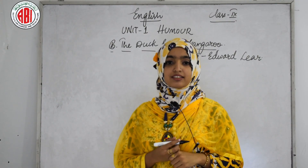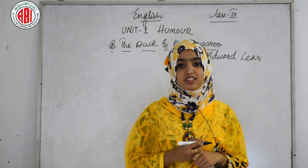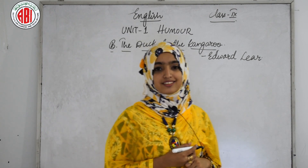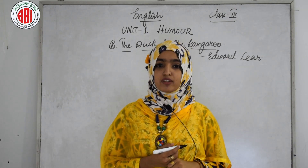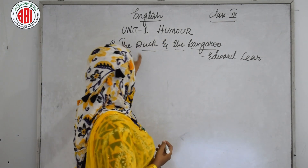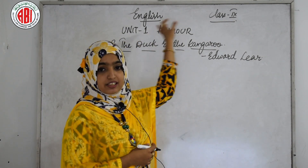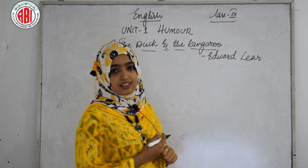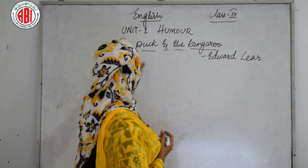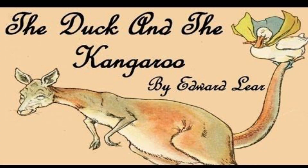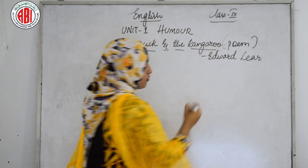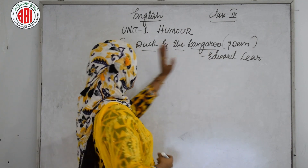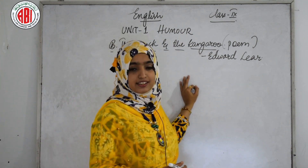Hello everyone, welcome to my class. I'm Afshan, English teacher at Alibad High School and Junior College. Today we will go with the class 9th English syllabus. In our previous class we completed Part A of our first unit — the lesson 'The Snake and the Mirror.' Now let us begin with Part B of the first unit: 'The Duck and the Kangaroo,' which is a poem. The first one was a prose part; this one is a humorous poem.